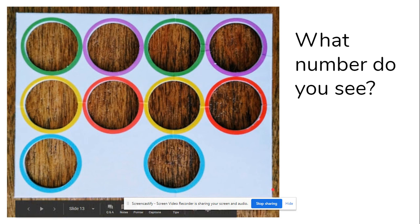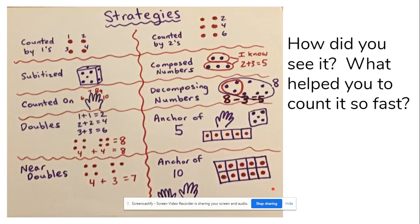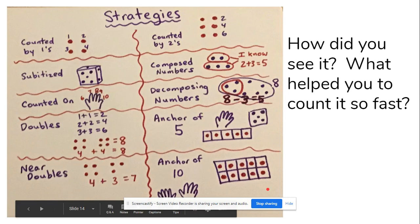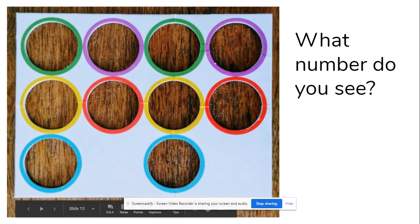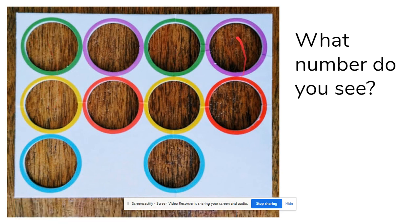This is our last one. Look closely. What number do you see? Okay, shout out loud. If you said the number 10, you're correct. Let's go back and see how you saw it. I saw it like this. Two, four, six, eight, ten. How did you see it? Tell an adult what strategy you use.